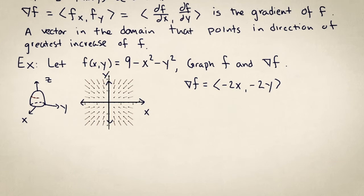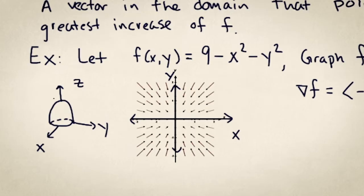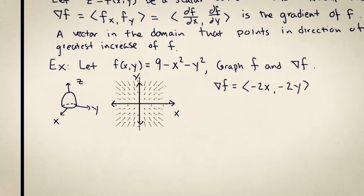Here's the graph of the surface. It has circular cross sections. And if you were standing at a point on the surface, then you would need to walk towards the origin in order to go up the hill. So all the vectors in the gradient point towards the origin.